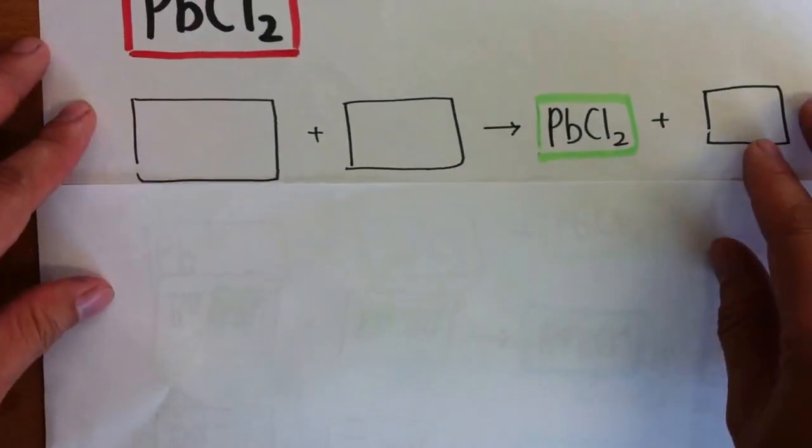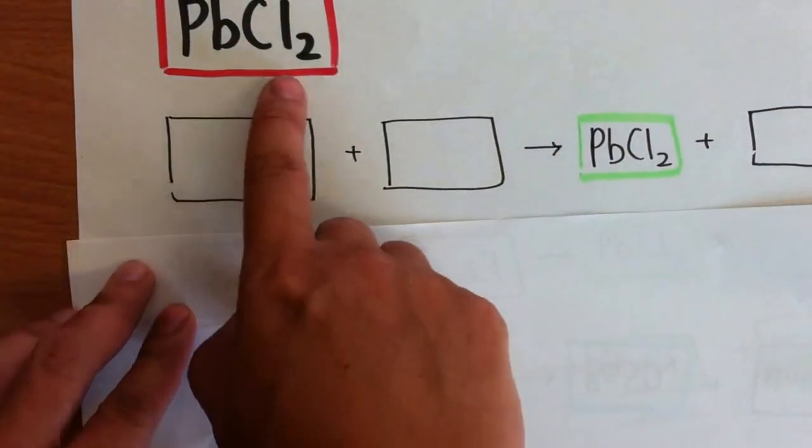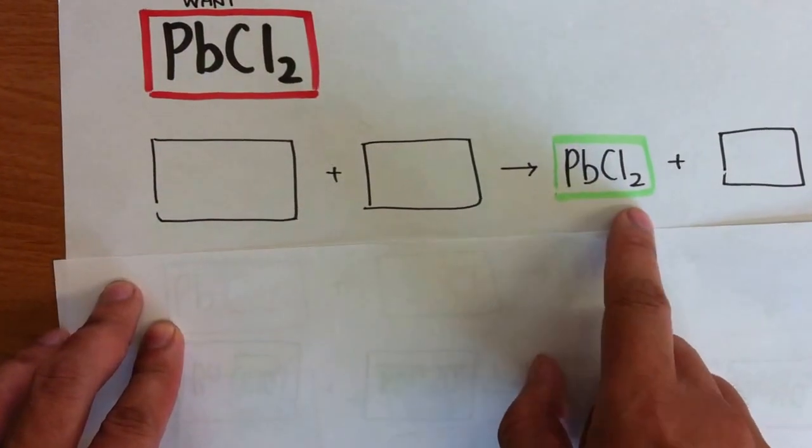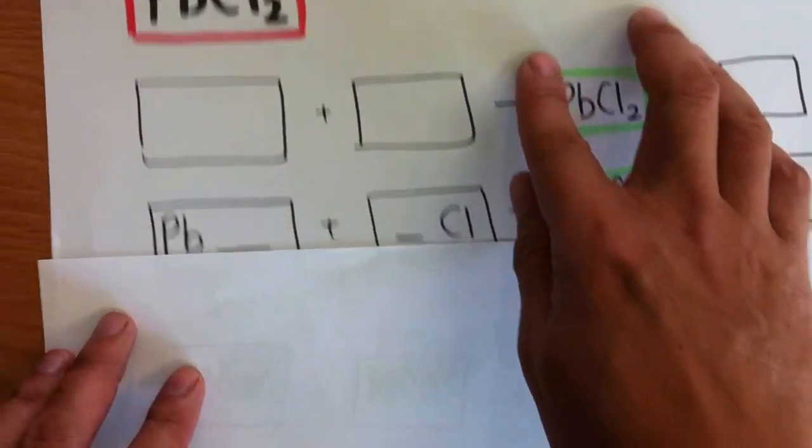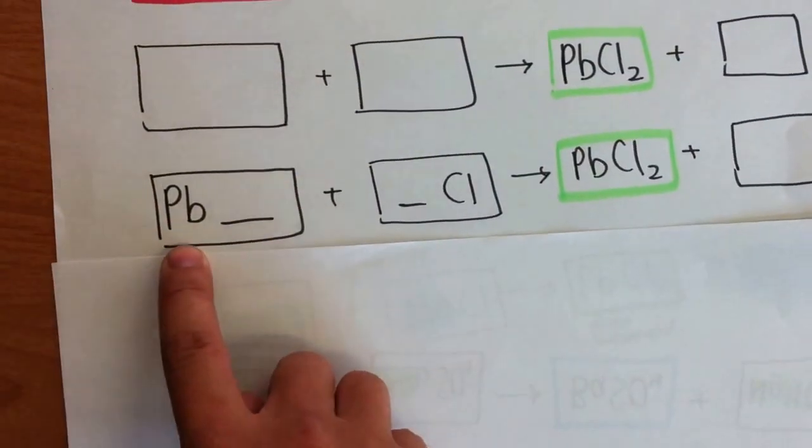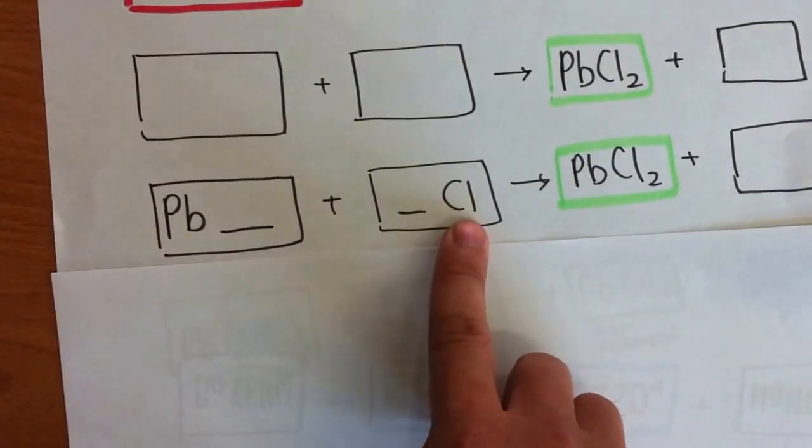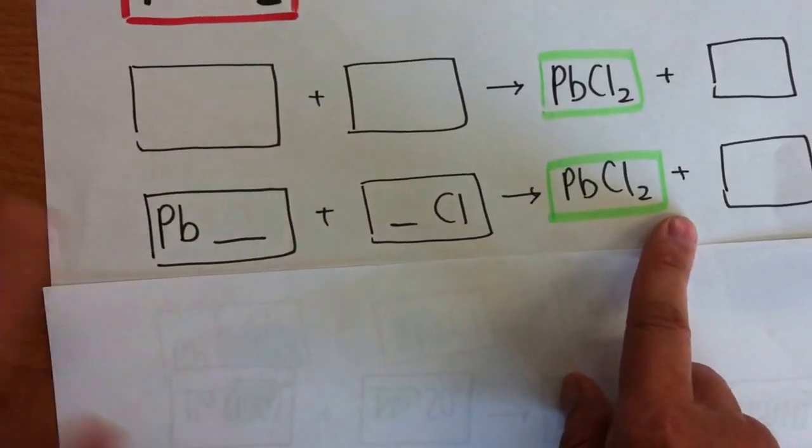One more example. PbCl2 is another insoluble salt. This is what I want. PbCl. So, break it up. Lead. Alright. Lead chloride is something that I want.